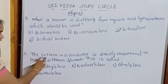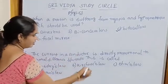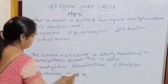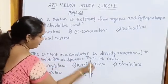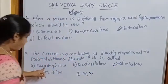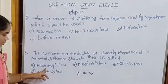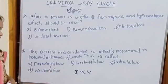Next, the current in a conductor I is directly proportional to potential difference between ends V. This is called Ohm's law. Faraday's law, Kirchhoff law, Ohm's law, Newton's law are the given options.